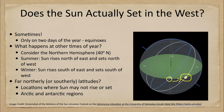The only times when the Sun will rise directly east and set directly west are on those two days we previously talked about — the equinoxes — when the Sun's path leads it along the celestial equator. Now, as an aside, what happens if you get farther north or south from a typical latitude where a lot of people live?